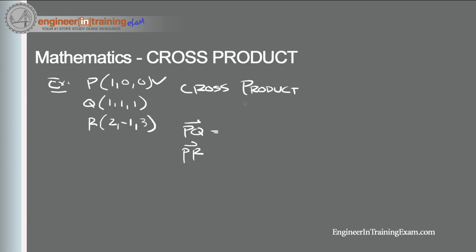We find the vectors by subtracting the coordinates of P from Q and R respectively. Vector PQ is (1-1, 1-0, 1-0), giving components (0, 1, 1). Vector PR is (2-1, -1-0, 3-0), giving components (1, -1, 3). Now that we have our two vectors defined, we can use the method of cofactors to determine the cross product of these two vectors.